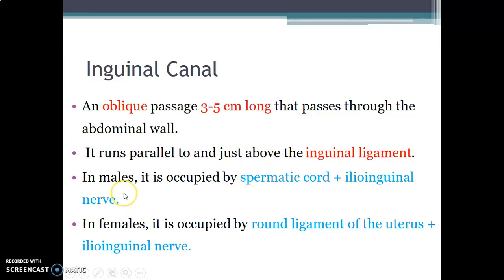The contents of the inguinal canal differ by sex. In males, the inguinal canal contains the spermatic cord and the ilioinguinal nerve. In females, it contains the round ligament of the uterus and the ilioinguinal nerve.